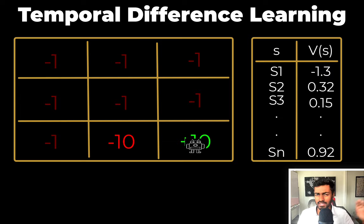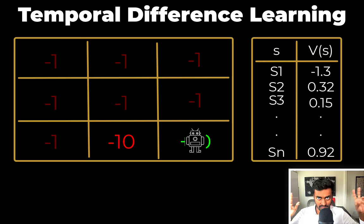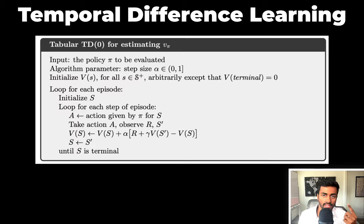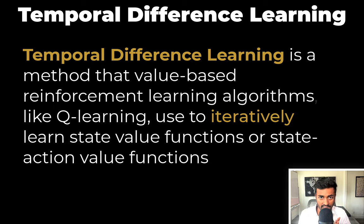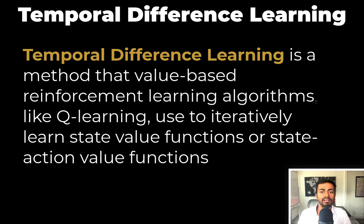Once the value functions are learned, an agent, instead of taking a random action, can now take an action based on the value functions in the table. The value functions determine the actions, which means they determine the policy. The optimal policy will be determined by what is the best value function given your state. In the textbook linked in the description, these are the steps we just talked about. So, temporal difference learning is a method that value-based reinforcement learning algorithms, like Q-learning, use to iteratively learn state value functions or state action value functions. There are other versions of temporal difference learning when you take multiple time steps instead of single time steps, but I hope this video helped you understand the concept.